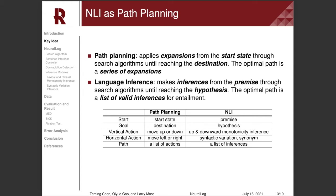And the list of expansions becomes an optimal path. For language inference, we can define the premise as the start state and the hypothesis as the destination. Then, we can continuously conduct inferences from the premise through a search algorithm until the hypothesis is reached. In a grid map, an agent can move vertically or horizontally. Similarly, language inference also contains these two types of actions.